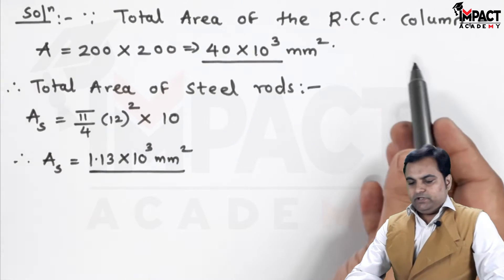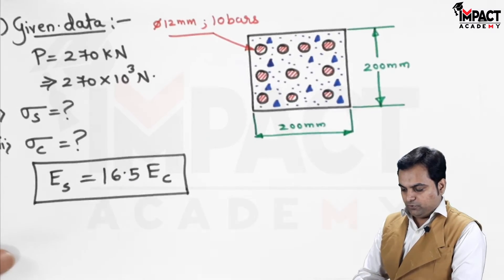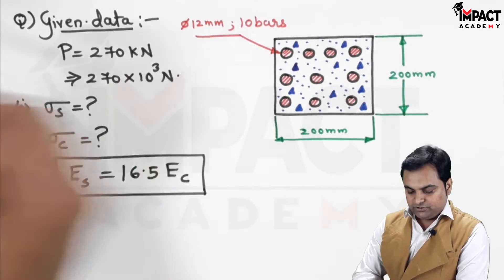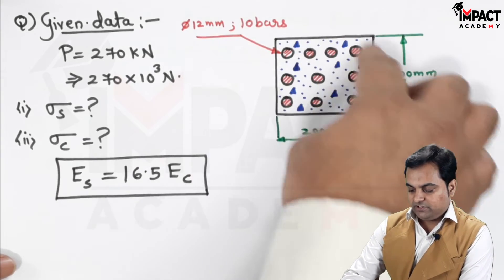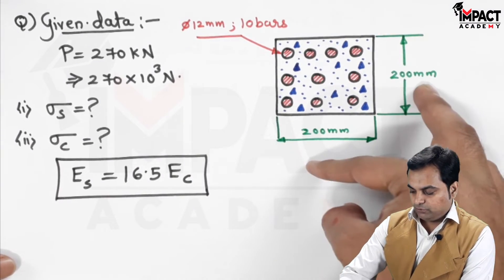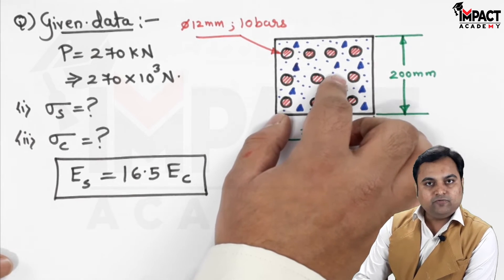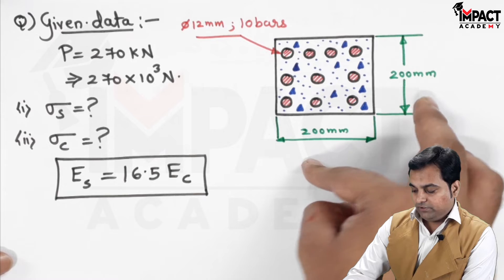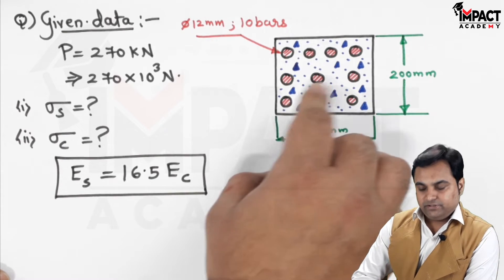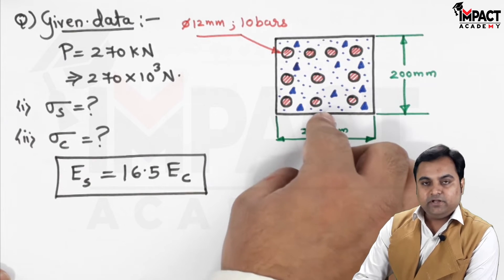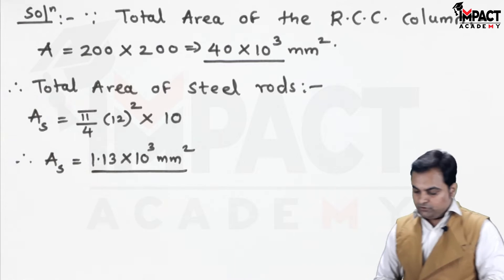Now, from the total area of the RCC column, I am going to subtract the area of steel rod to get the area of concrete. Because, when we remove all the steel rods, whatever is left here is the concrete area. That is from total, I am going to subtract the area of the steel rod. That would give me the area of concrete. And, remember, 200 into 200 is not the total area for the concrete.